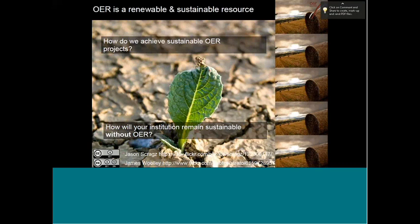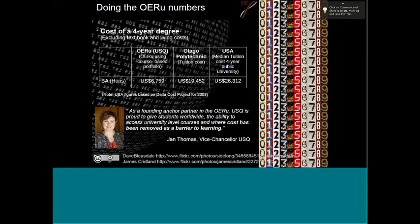Let me illustrate this with a practical example. In the United States today, the average cost for a four-year degree in the public university sector is roughly about $26,000 — figures from 2008. Here in New Zealand, an example for a four-year degree at Otago Polytechnic would be roughly just short of $20,000 US. Under the OER University collaboration, having just launched our first prototype course, the comparable cost of a full four-year degree would be just short of $7,000. As the Vice Chancellor of the University of Southern Queensland has indicated, we have succeeded in removing cost as a barrier to learning.